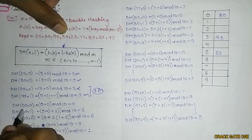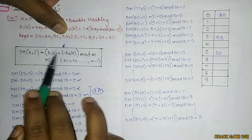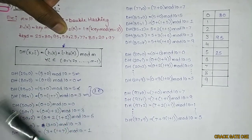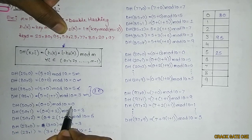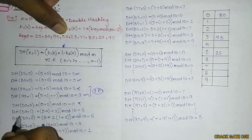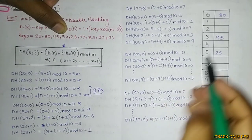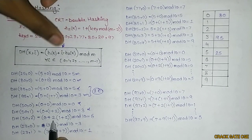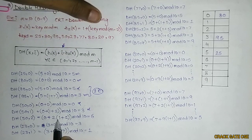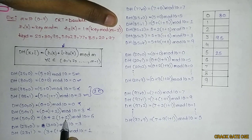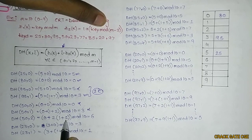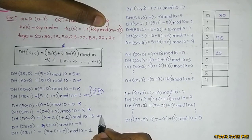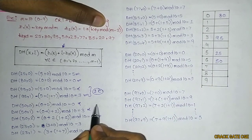For key 50: with i=0, 50 mod 10 = 0 — collision. With i=1, result is 3 — collision again (95 is there). With i=2: h1(50) = 0, h2(50) = 1 + (50 mod 8) = 1 + 2 = 3, so 0 + 2×3 = 6, and 6 mod 10 = 6. We store 50 at position 6 — two collisions for 50.